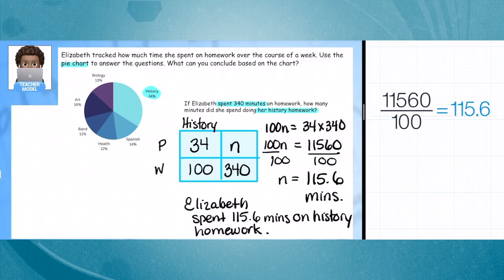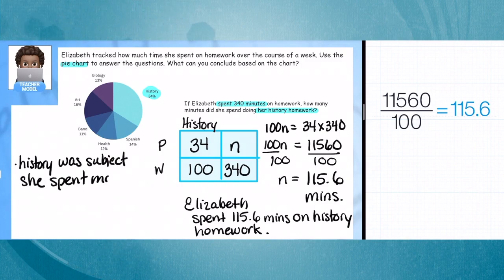Now what else can we see or notice from the pie chart? One thing we can definitely see is how many subjects she studied: history, bio, art, band, health, and Spanish. The great thing about pie charts is you can see which is the biggest piece of the pie. In this case, history was the biggest piece of the pie.